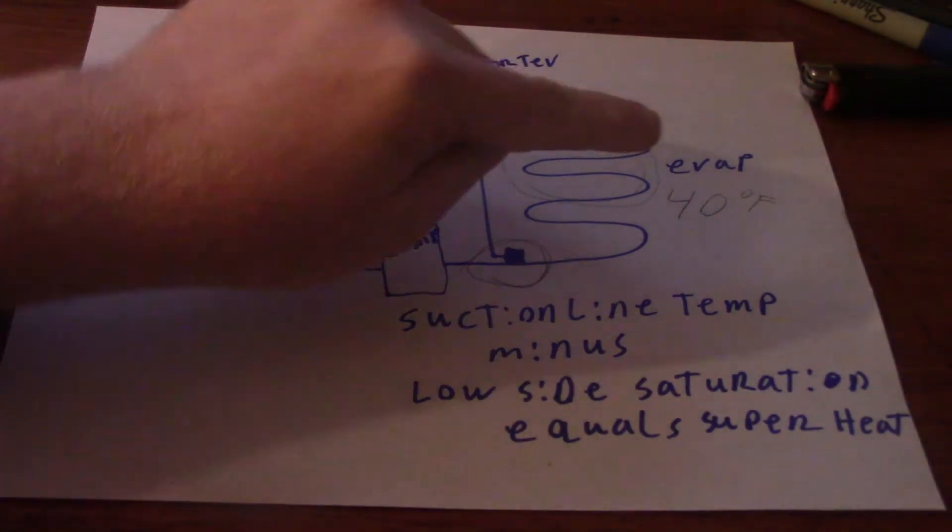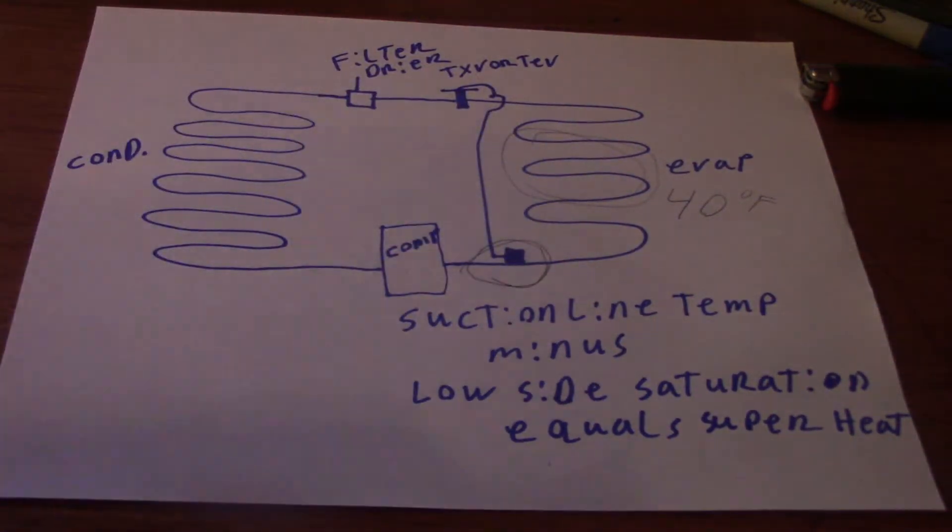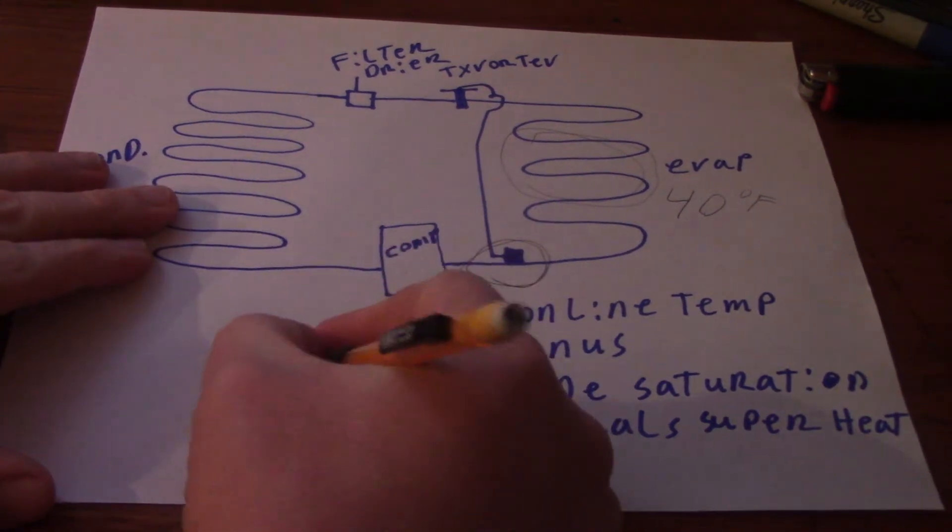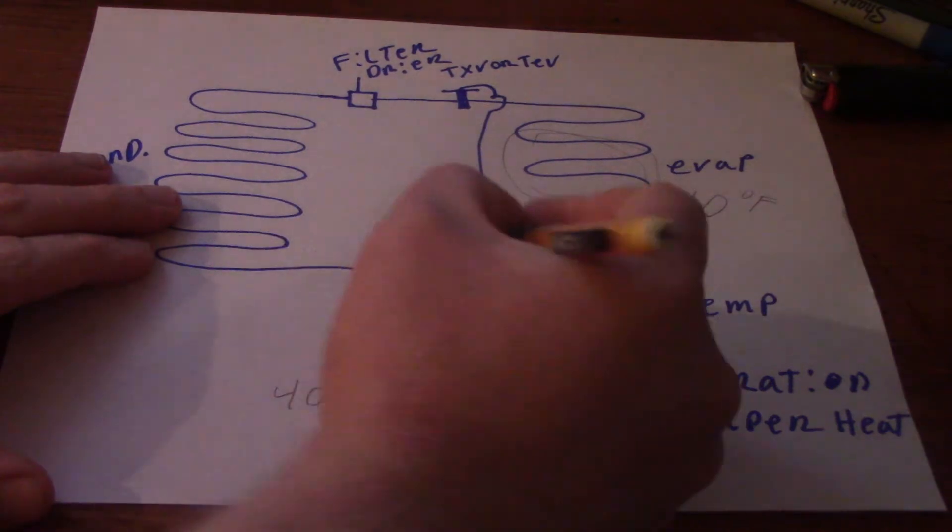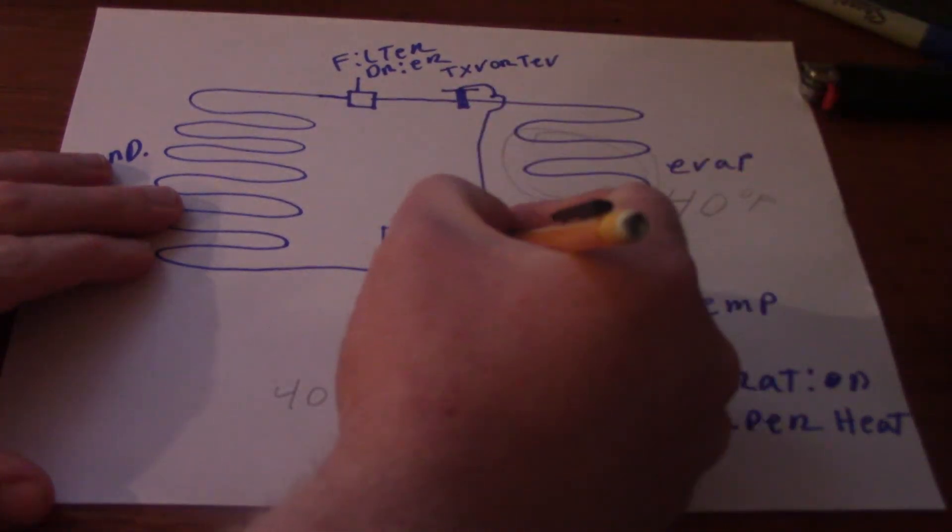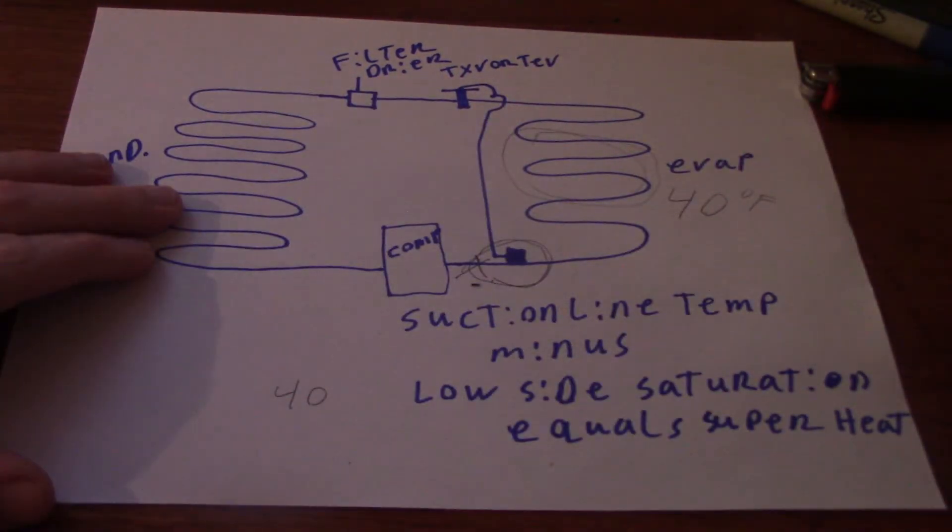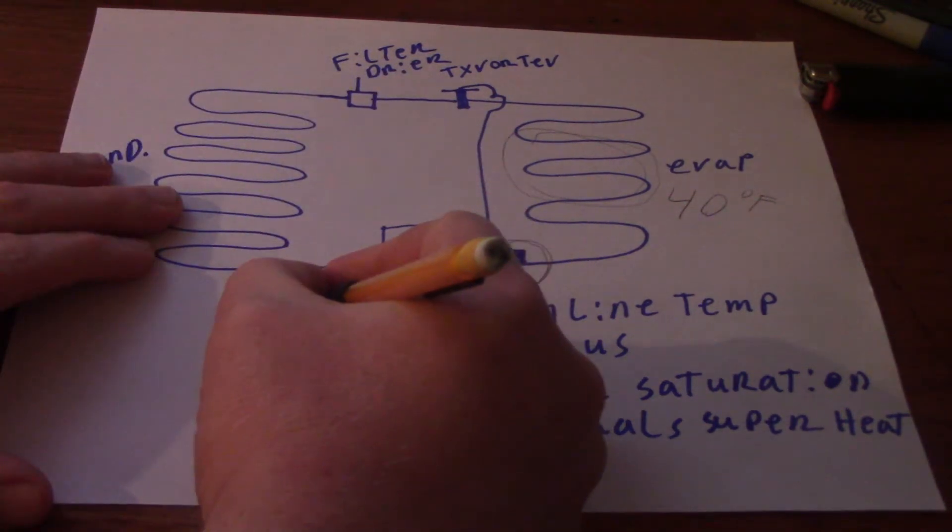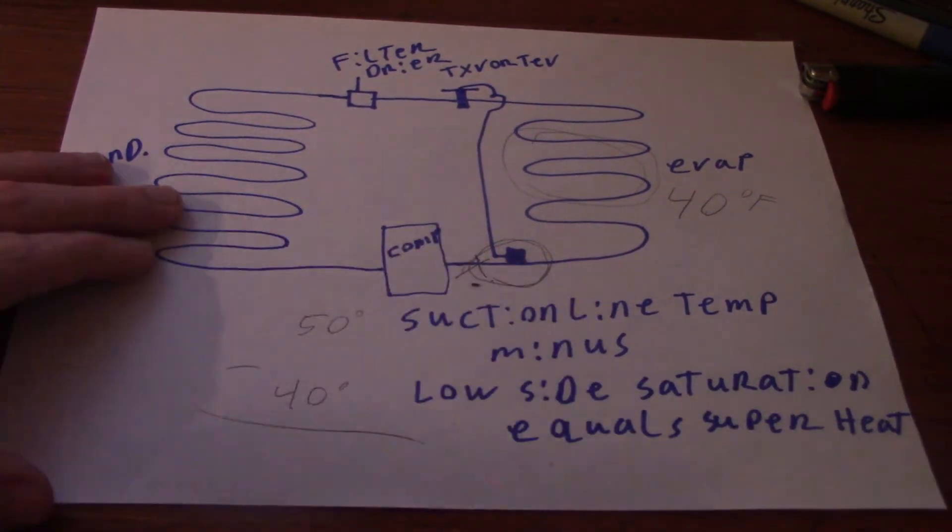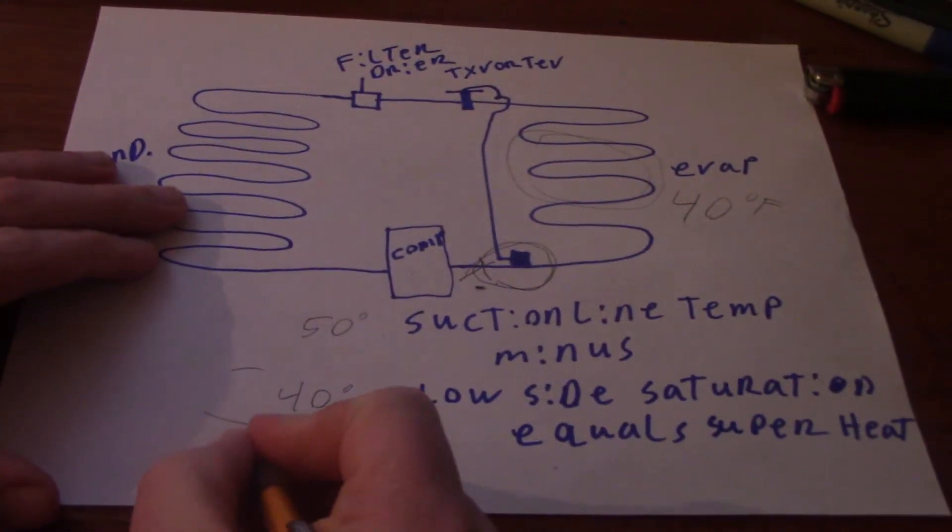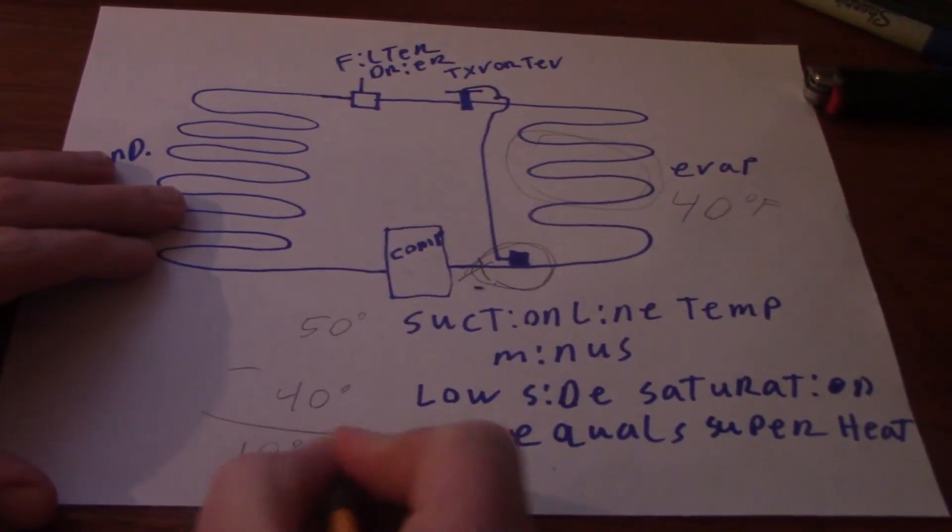So let's say we boiled off at 40 degrees there. So our saturation we'll put as 40 there. Let's say we put our temperature probe, broken pencil, hey there we go, look we're doing it, yay! We go right there for suction line temperature, and it was, we'll say 50 degrees Fahrenheit, minus, put our equal sign there, 50 minus 40, means the system's going to run with 10 degrees of superheat.